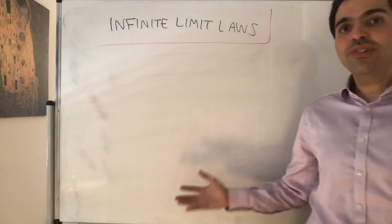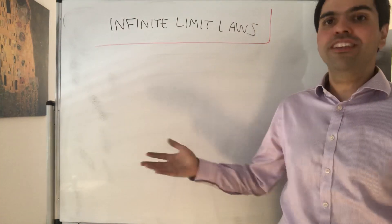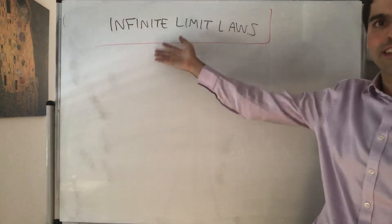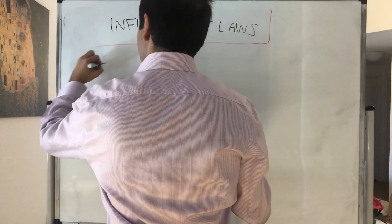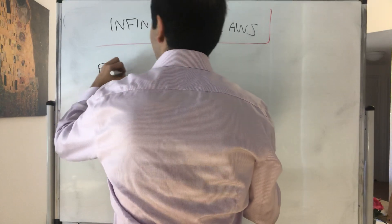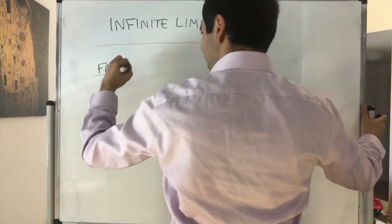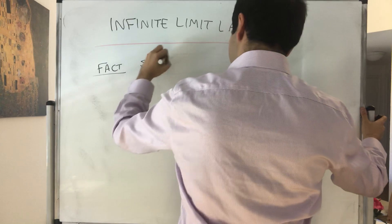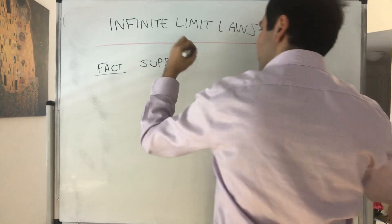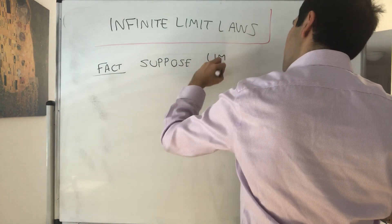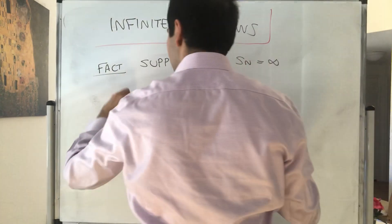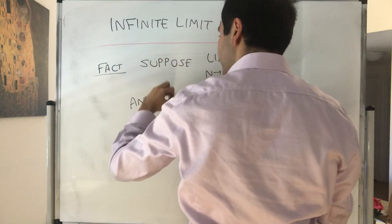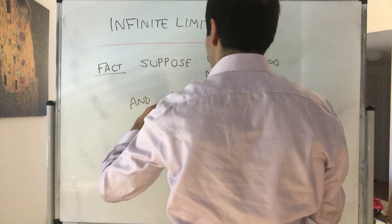All right, thanks for watching, and today as a practice with infinite limits, let's prove an example of an infinite limit law. And in fact, let's show an infinite product law. So in other words, suppose Sn goes to infinity and either Tn goes to a positive number,